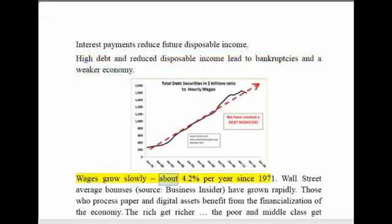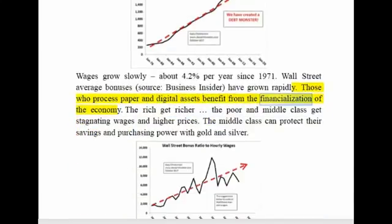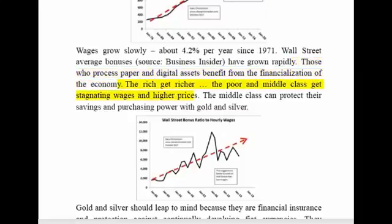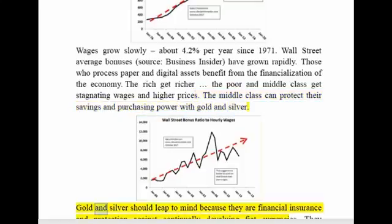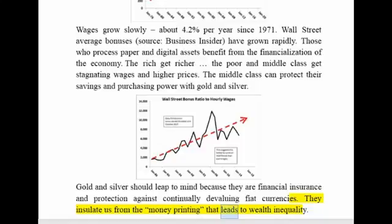Wages grow slowly — about 4.2% per year since 1971. Wall Street average bonuses, per Business Insider, have grown rapidly. Those who process paper and digital assets benefit from the financialization of the economy. The rich get richer; the poor and middle class get stagnating wages and higher prices. The middle class can protect their savings and purchasing power with gold and silver, which are financial insurance and protection against continually devaluing fiat currencies, insulating us from the money printing that leads to wealth inequality.